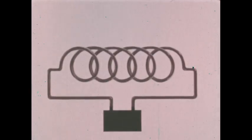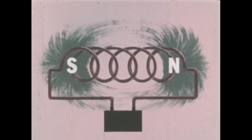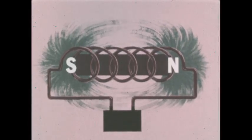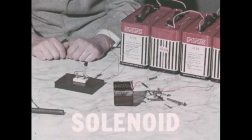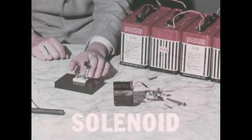When a wire is wound into a coil and an electric current is sent through it, a magnetic field is produced similar to the magnetic field around a bar magnet. A coil of wire is called a solenoid. When a current flows through it, the solenoid acts like a magnet.